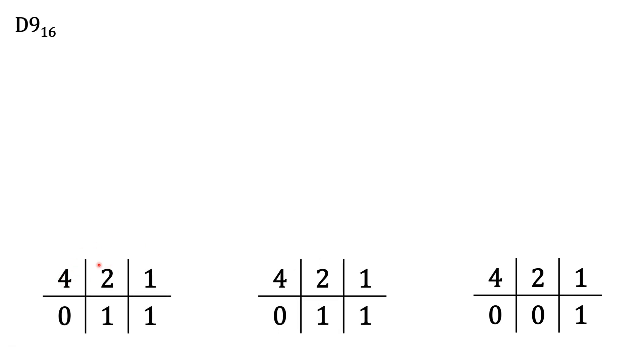Let's figure out what the value of this number is in octal. So we've got zero fours, one two, and one one. So two plus one is three. Here we have zero fours, one two, and one one. So two plus one is three.